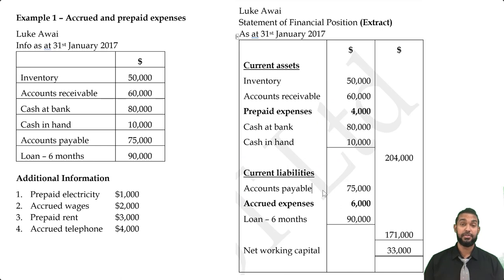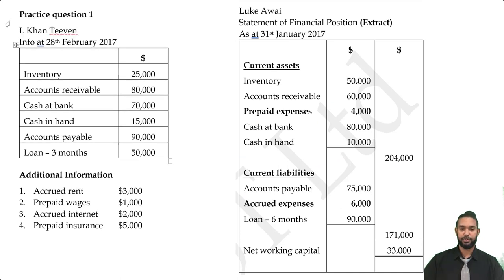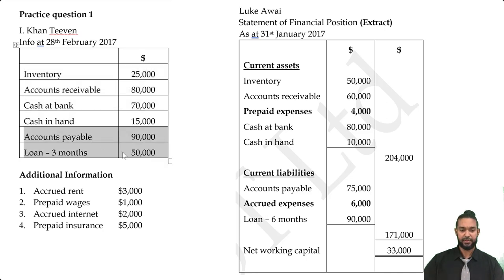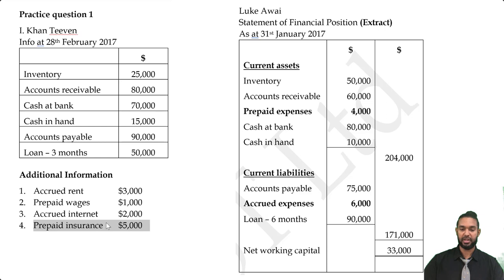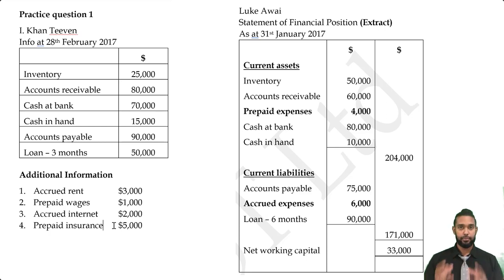Now I want to give you one to try. Practice question one is for I-Can't-Even at February 28th, 2017. It has the same four current assets and essentially the same current liabilities with different figures, plus additional information: accrued rent, prepaid wages, accrued internet, and prepaid insurance. I've left the example up on the right-hand side for reference. Pause the video, get your pencil and paper, try the question, and unpause to check the solution.